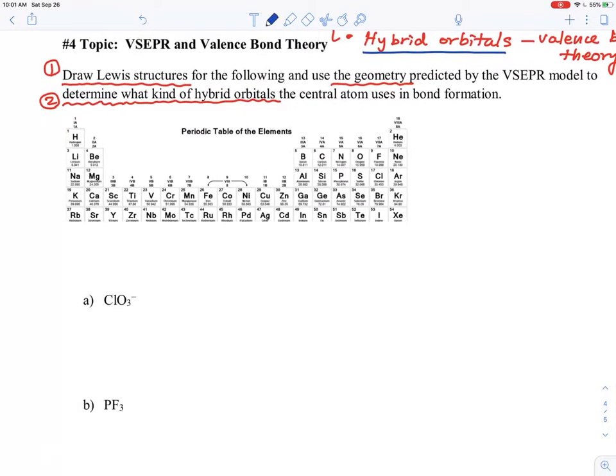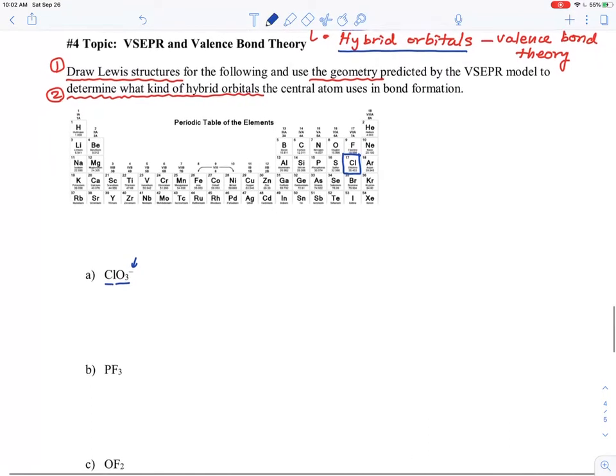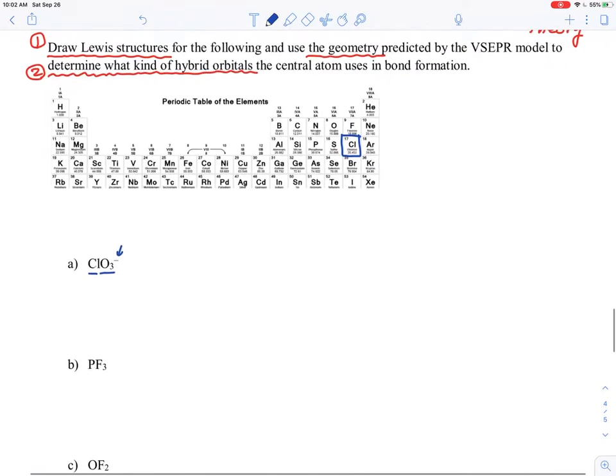First thing is ClO3-. This is probably the one where the Lewis structure is the most difficult to figure out. The chlorine is right there, and there are three oxygens with negative charges in it. Chlorine goes in the center. I want to show you how to solve it in a much quicker way.